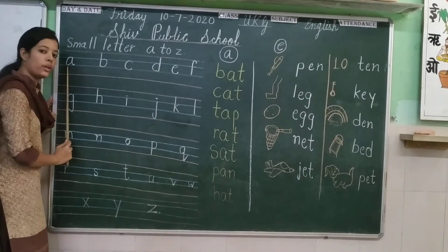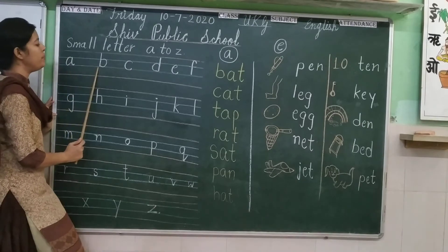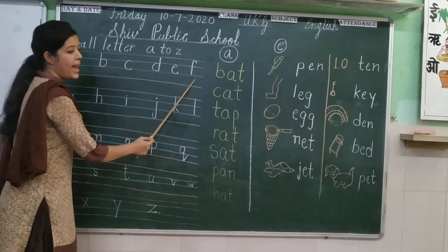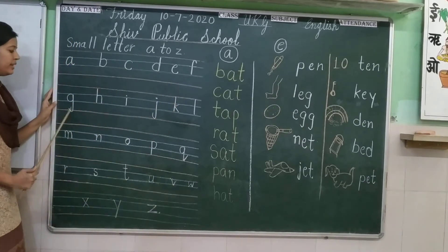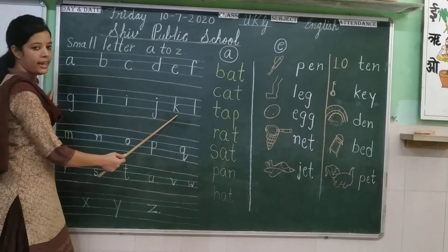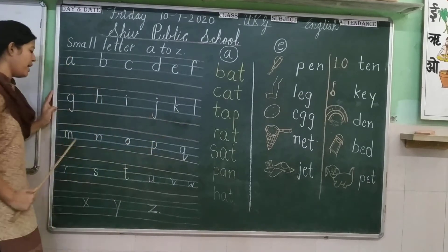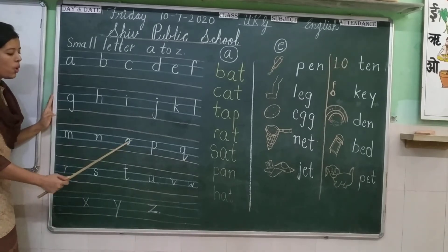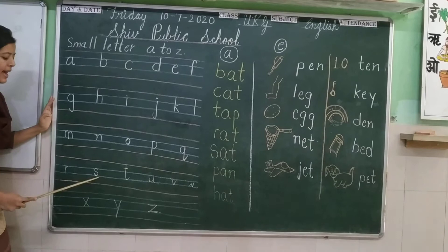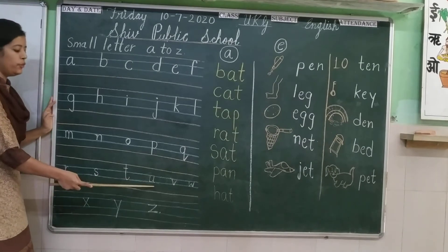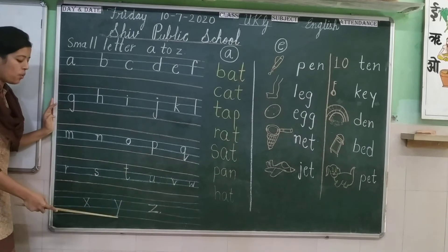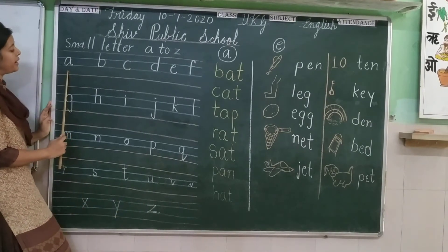Repeat after me: A, B, C, D, E, F, G, H, I, J, K, L, M, N, O, P, Q, R, S, T, U, V, W, X, Y, Z. Let's repeat again.